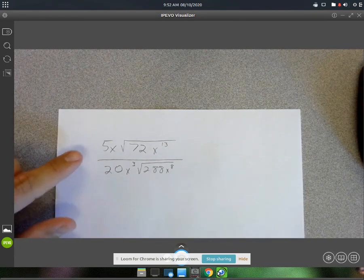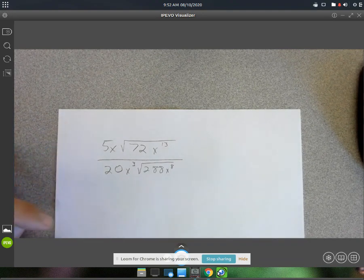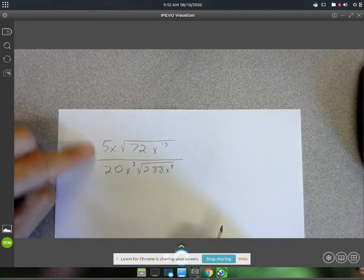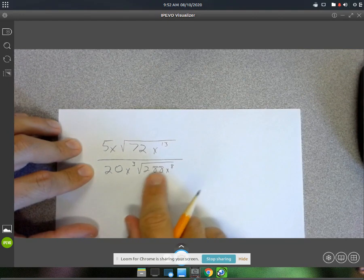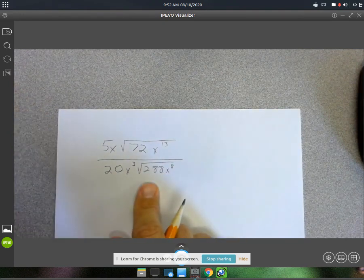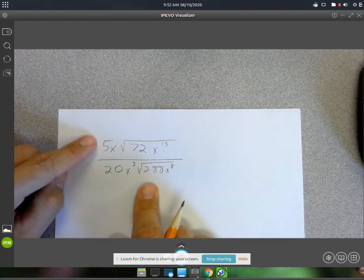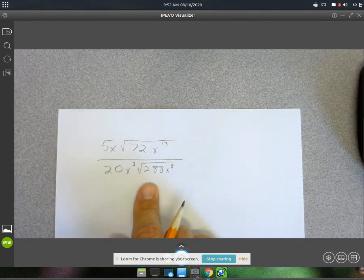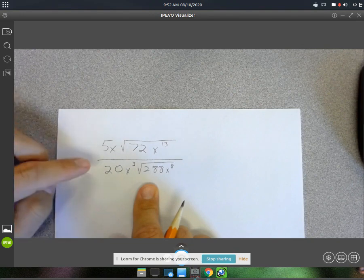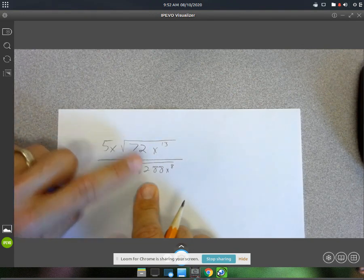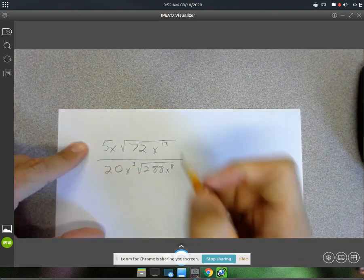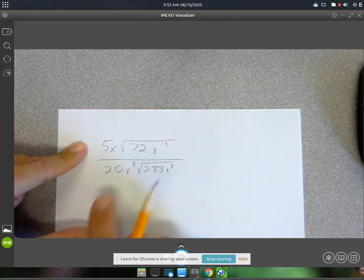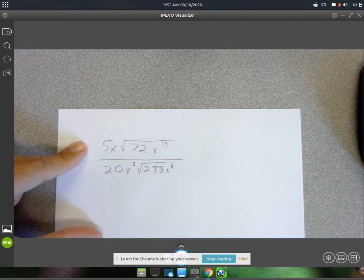So the rules go that you can simplify the numerator and denominator before you start simplifying these radicals. The way it works is you can simplify the outside with the outside and the inside of the radical with the inside, but you can't simplify 72 and 20 because one's on the outside and the other's on the inside.